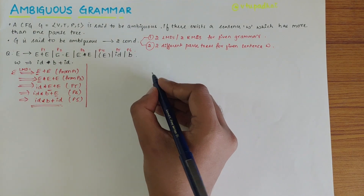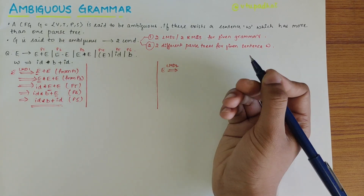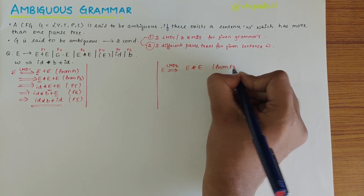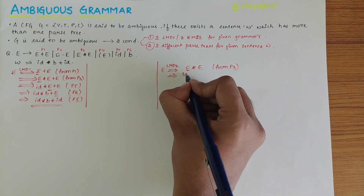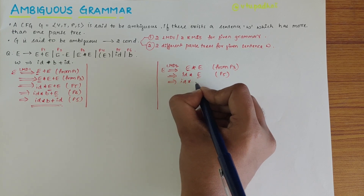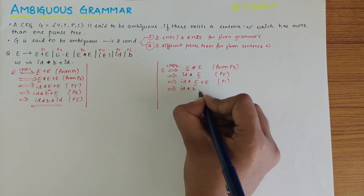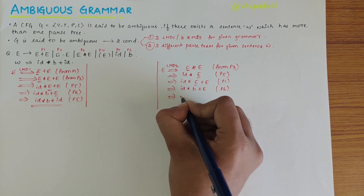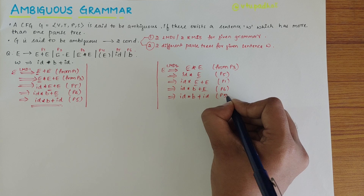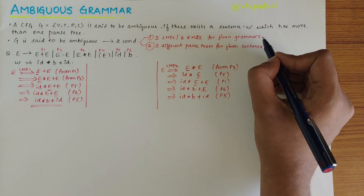Now let's consider LMD2 for the same production. We start from E derives E*E — from P3. The leftmost variable is changed: E*E gives ID*E — from P5. Next, this E is changed: ID*E+E — from P1 — then ID*B+E — from P6 — and finally ID*B+ID — from P5. We have obtained two LMDs for the given grammar; the first condition is satisfied.